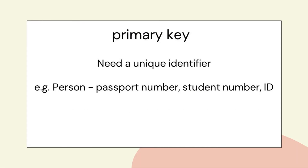One thing that's very important is we need something called a primary key. We have our table — our entity — and we need to be able to identify each record. For example, if it's a person, you identify them by their passport number, student number, or social security number — some type of unique identifier. In the database, this is called a primary key.